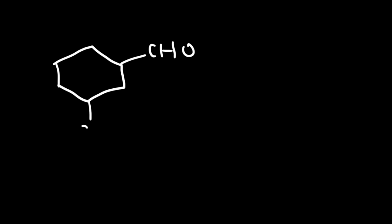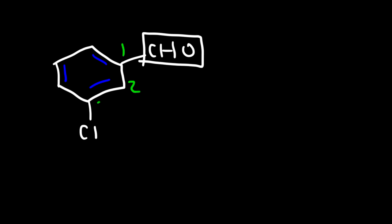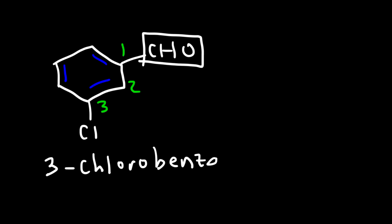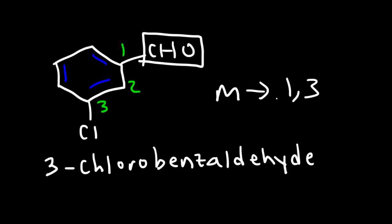Let's say we have a CHO group and a Cl on a benzene ring. A benzene ring with a CHO group is called benzaldehyde — that's the parent name, so the aldehyde is on carbon 1. We can call this 3-chlorobenzaldehyde, or meta-chlorobenzaldehyde, because meta corresponds to the 1,3 positions.